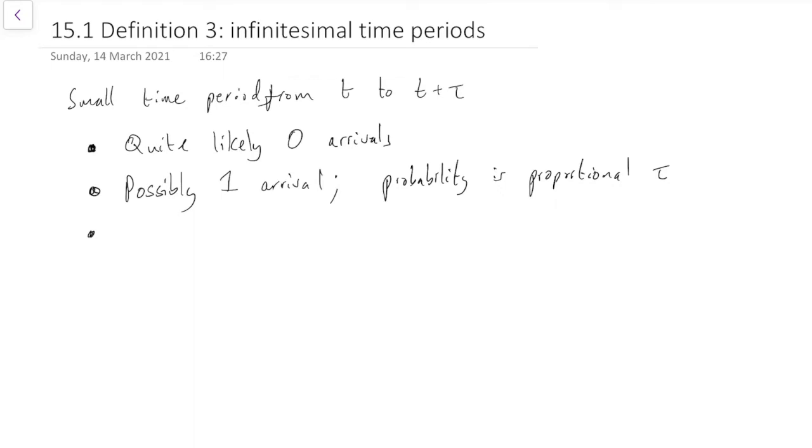What about the chance there'll be more than one arrival? Well, we're looking at a very small amount of time tau here. So in a very small amount of time tau, let's say it's extremely unlikely that two arrivals will come in such a tiny amount of time. So extremely unlikely to be greater than or equal to two arrivals.